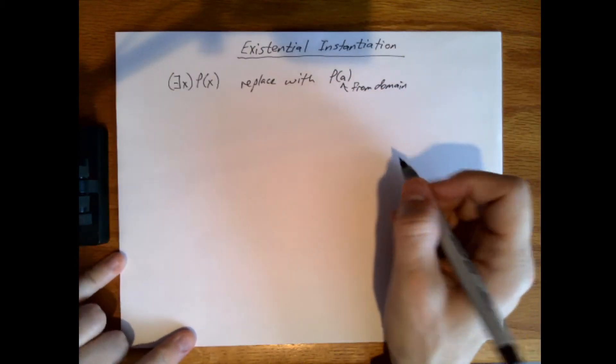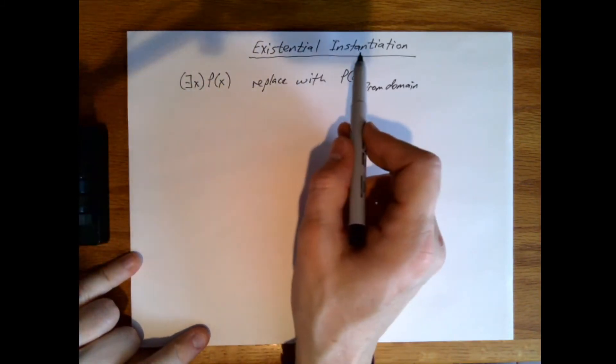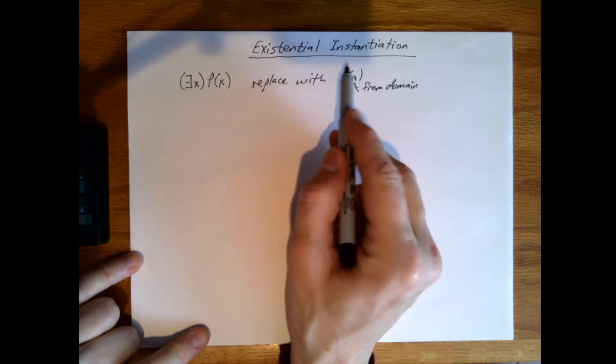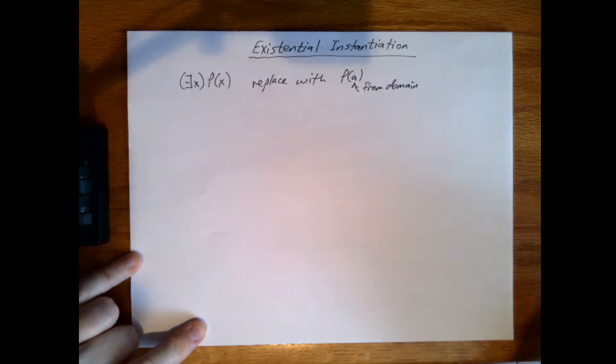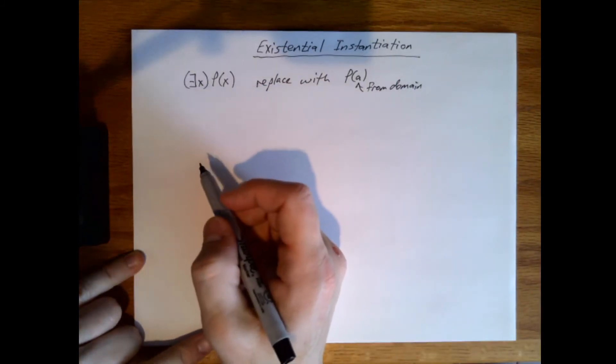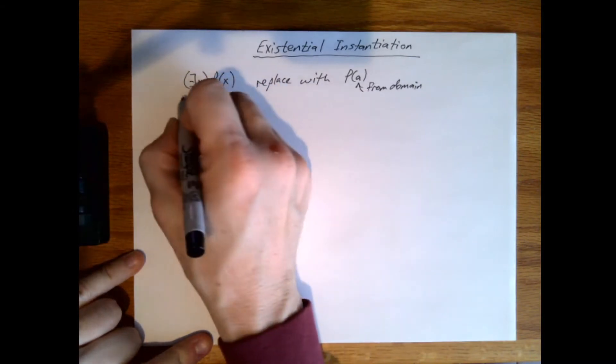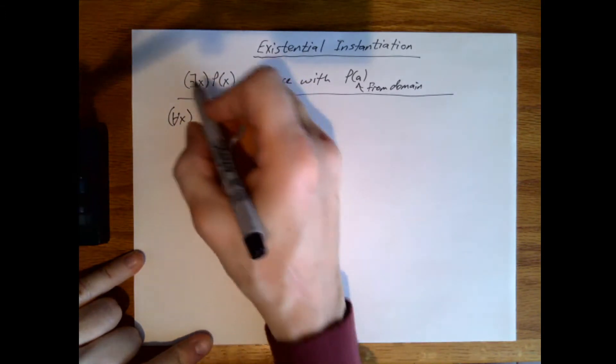Now there's many times that we would need to use the existential instantiation process with the universal instantiation process, but order matters. So let's look at an example and I'm going to work it out first and then explain why I did things in the order I have.